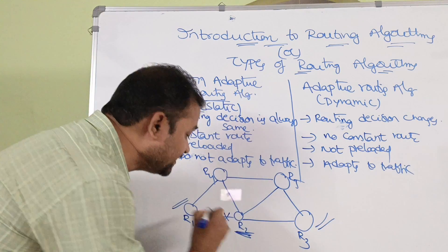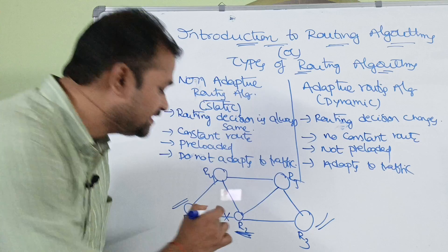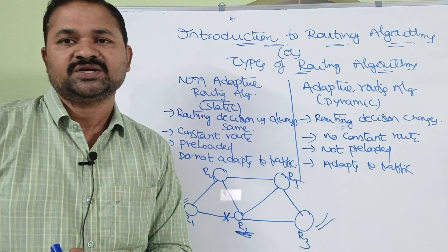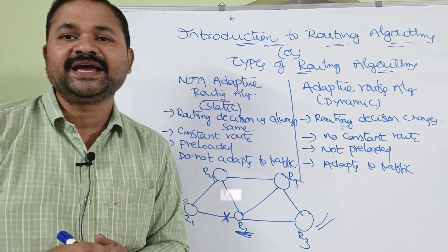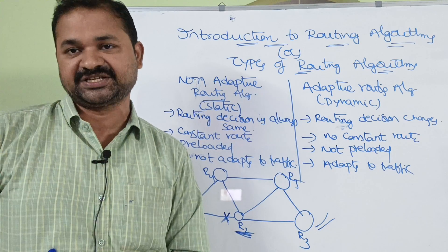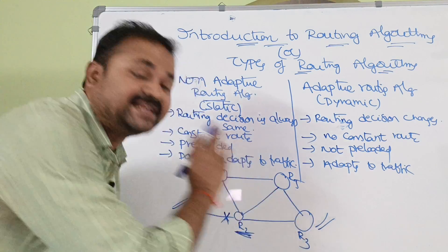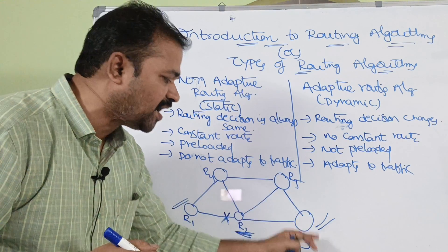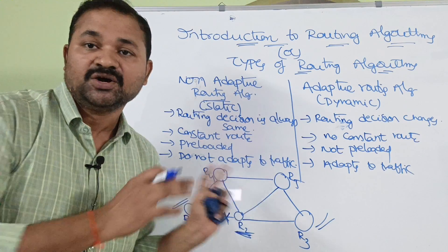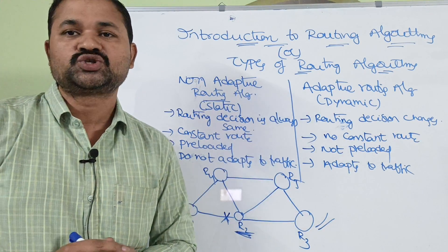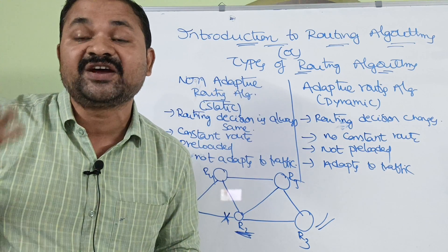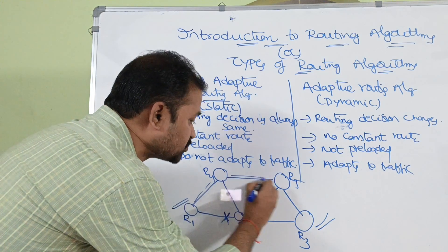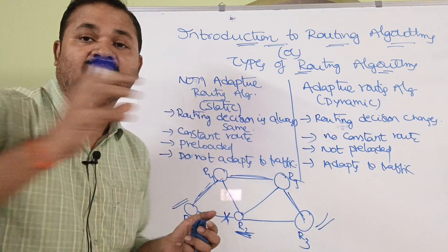Now let us assume that this link fails due to some problem — the link is broken. The problem here is that we are not using any routing protocols, so whenever a link fails, the router cannot make any dynamic decisions. The router cannot transmit the packet in another way. There is another way: R1 can transmit to R4, then R4 to R5, then R5 to R3. But the router can't make that decision on its own — we have to take the help of the network administrator to configure that route in the routing table.